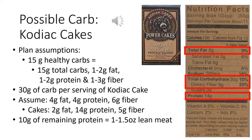Another common carb question: Kodiak cakes. Your Kodiak cakes are going to be counted as a healthy carb and as a protein. First, let's look at it as a carb. This particular variety has 30 grams of carbs per serving. For 30 grams of carbs, we assume up to four grams of fat, up to four grams of protein, and up to six grams of fiber. The Kodiak cakes only have two grams of fat — well within range. They have 14 grams of protein, which is 10 grams above what is allotted, and only five grams of fiber, well within range.